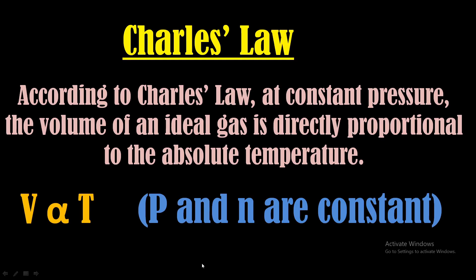According to Charles' Law, at constant pressure, the volume of an ideal gas is directly proportional to the absolute temperature. We can write it mathematically as V is directly proportional to T. Volume of the gas is directly proportional to temperature when pressure and number of moles, that is, mass of the gas, is kept constant.